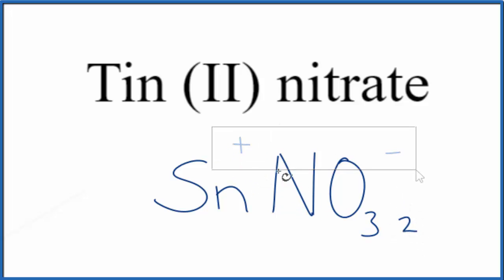Let's get rid of these charges. And since we have 2 nitrate ions, what we need to do is put parentheses around the nitrate ion. And this is the formula for Tin (II) nitrate.